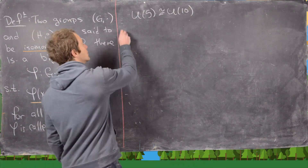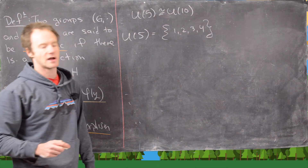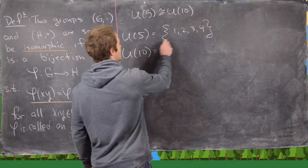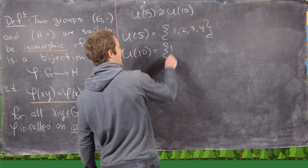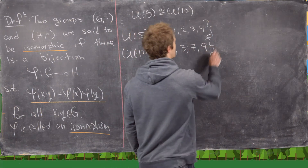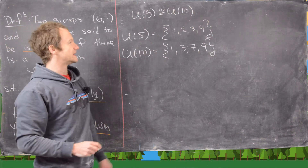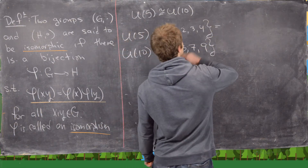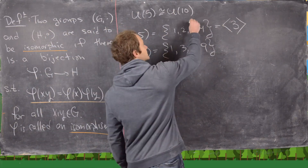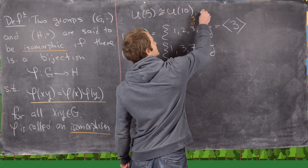U₅ = {1, 2, 3, 4} since 5 is prime, giving all numbers between 1 and 4. For U₁₀ we need everything relatively prime to 10, so no even numbers and not 5, giving U₁₀ = {1, 3, 7, 9}.